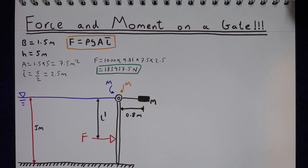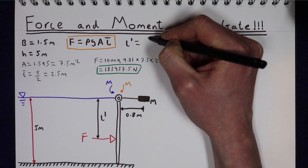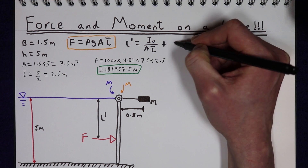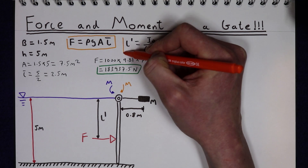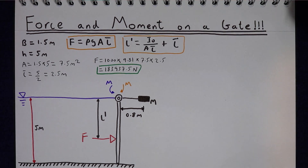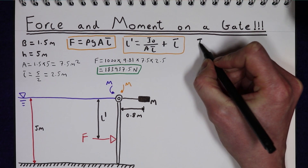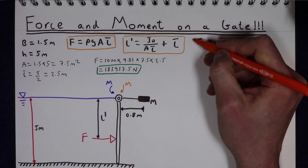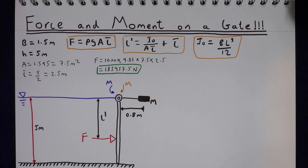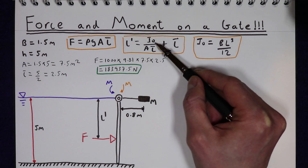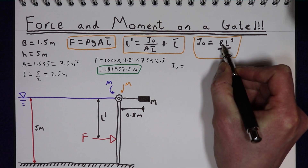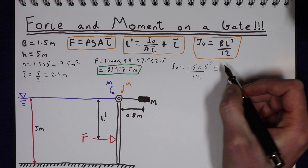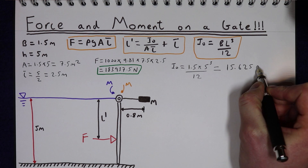Next we need to calculate the location at which that force is acting. L' is going to be equal to the second moment of area around the neutral axis of the surface divided by the area of the surface times by the centroid of the surface, added to the centroid of the surface. In order to find L' we also need to know the second moment of area of the surface about the centroid, I₀, which is equal to the breadth of the gate times the height of the gate cubed, divided by 12.